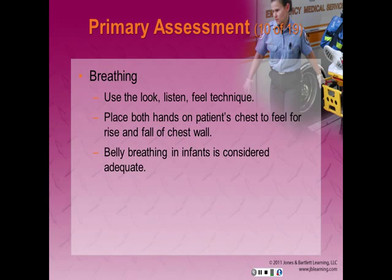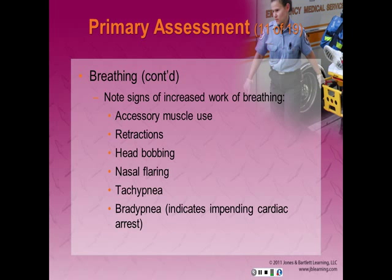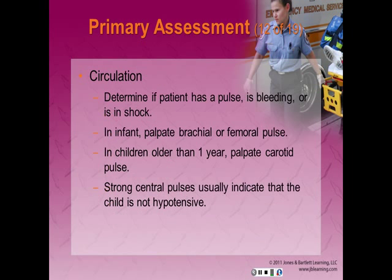Look, listen, and feel for breathing, placing both hands on the patient's chest to feel for the rise and fall of the chest wall. Belly breathing in infants is considered adequate because of the soft, pliable bones of the chest and the strong muscular diaphragm. Signs of increased work of breathing include: use of accessory muscles — contractions above the clavicles; retractions — drawing in of muscles between the ribs or sternum during inspiration; head bobbing; nasal flaring; tachypnea — increased respiratory rate; and bradypnea — a decreased respiratory rate that is an ominous sign indicating impending respiratory arrest.